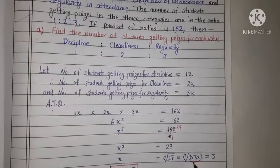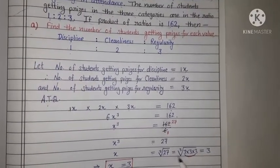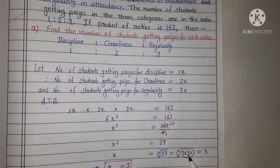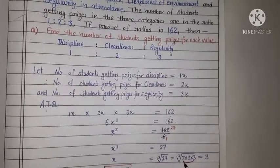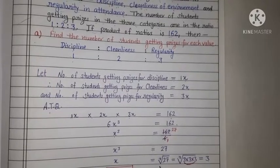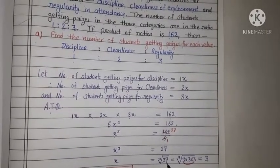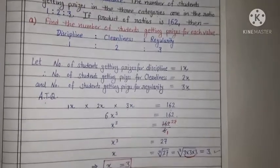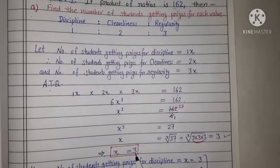Agar aap yahan par factor bana ke dikhana chahte hain, woh bhi aap yahan write kar sakte hain. That is cube root of 3 multiply 3 multiply 3. 3 apne triplet ko complete karega, cube root se bahar aa jayega. So we can say that cube root of 27 is equal to 3. This implies x is equal to 3.